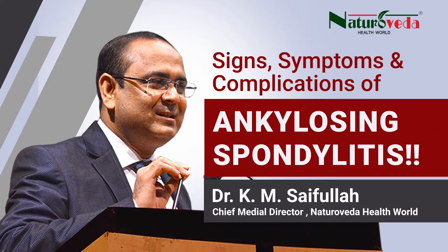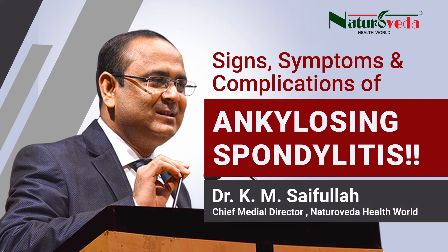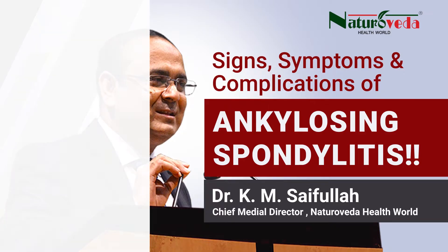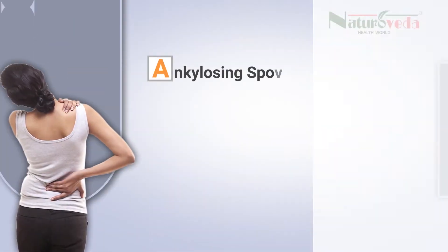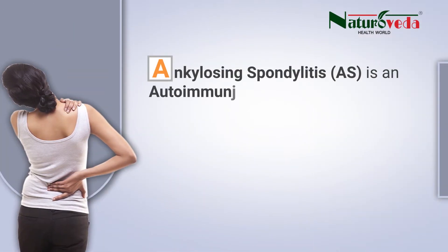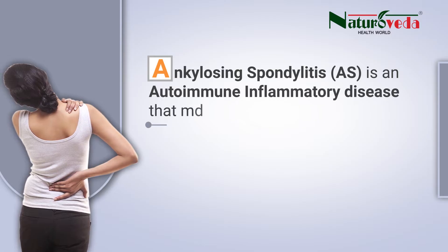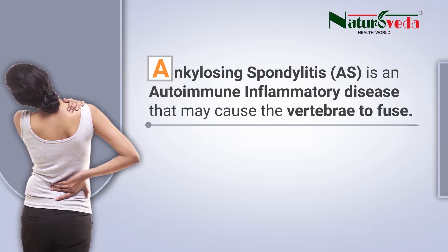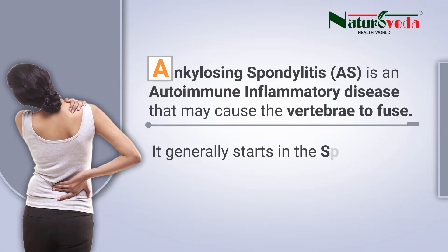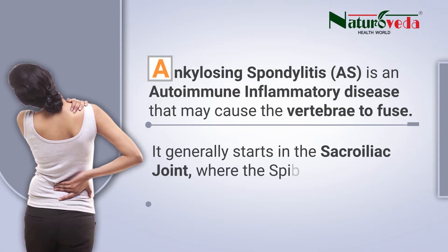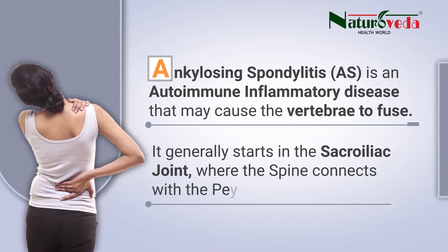Signs, Symptoms and Complications of Ankylosing Spondylitis. Ankylosing spondylitis (AS) is an autoimmune inflammatory disease that may cause the vertebrae to fuse. It generally starts in the sacroiliac joint, where the spine connects with the pelvis.